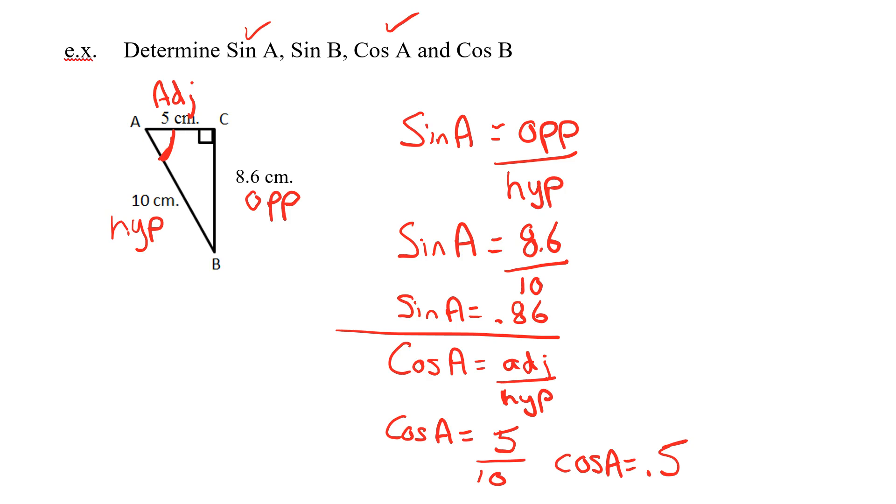Now I've got to switch to my B's. I'm going to switch colors here. I'm going to do the sine of B and the cos of B. Whenever I change angles, I must relabel the triangle. Because you can see that angle B is right down here. So we already saw from the tangent ratio that hypotenuse isn't going to change. It's still the longest. It's still across from the 90.